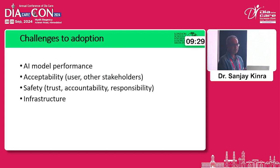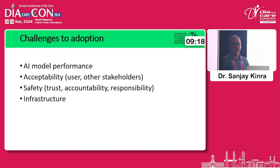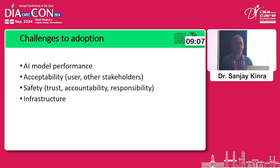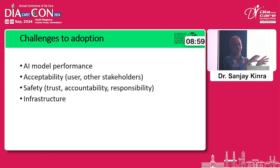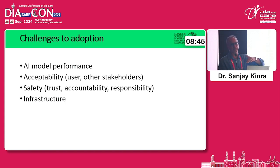Coming to the topic of greater interest to me — challenges to adoption. There are broadly four major challenges. The first is model performance. A lot of studies talk about a model for this or a model for that, but invariably the model is built on a population and validated within the same population, with very little validation in different populations. The context in India is very different from the UK or US, and taking a model from there and getting it to work here means the performance is such that it's not really usable — practically useless when adopted from elsewhere.